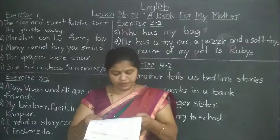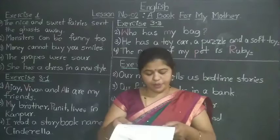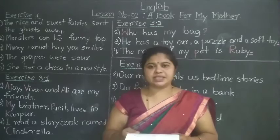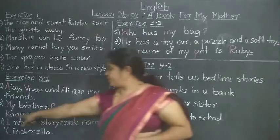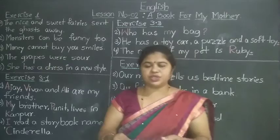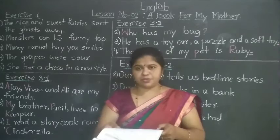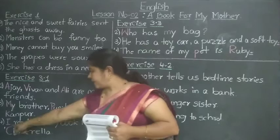Third: My brother Unik lives in Kanpur. My is the starting word so M should be capital. Unik is a special name of a person so U should be capital. Kanpur is a special name of a place so K should be capital. Fourth: I read a story book named Cinderella. I is always capital and also the starting word. Cinderella is the name of a story book — a title — so C should be written in capital.